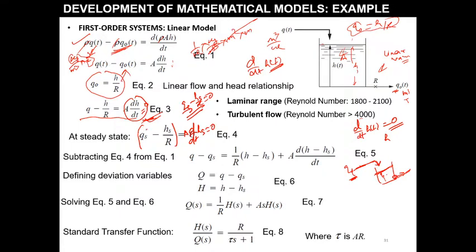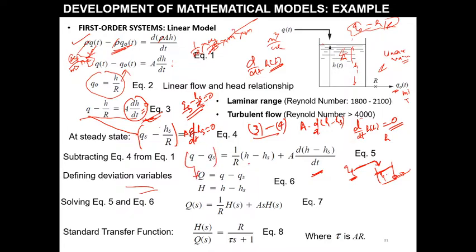Now subtract the steady state equation from the dynamic equation. We get Q minus Q_s, minus (H minus H_s)/R, equals A·d/dt(H minus H_s). Now define deviation variables: Q minus Q_s equals capital Q, and H minus H_s equals capital H.